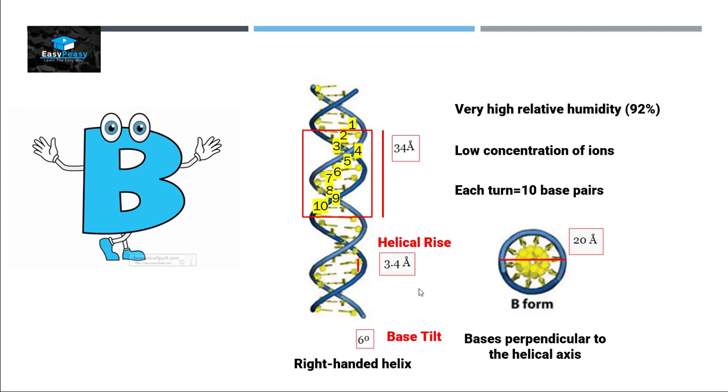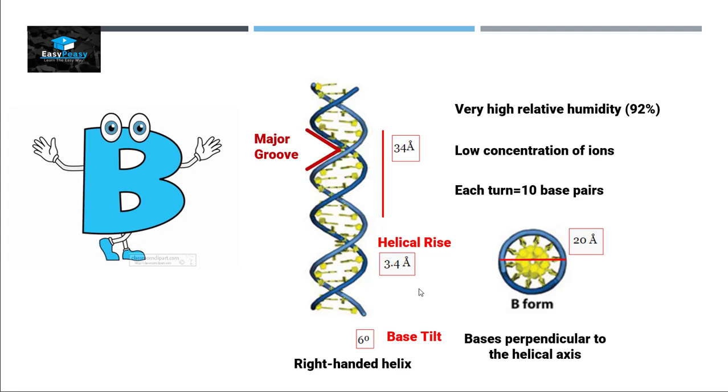We also have two grooves here: one is called the major groove, the other is called the minor groove. In B form, the major groove is wide and deep. As you can see, this greater sign is quite wide and it is deep inside the helical axis. The minor groove, on the other hand, is narrow and deep, so it is not as wide as the major groove but it is deep in the helical axis.